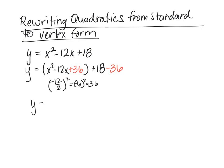So y equals, and then we're going to factor what's inside the parentheses, x minus 6 squared, and then 18 minus 36 is minus 18. Now my equation is in vertex form. Let's identify the vertex. The vertex is 6 comma negative 18.